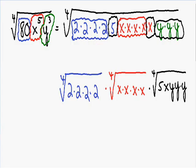If we start with these four twos, the fourth root of four twos is just two. The fourth root of four x's is just x.